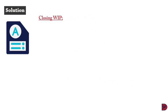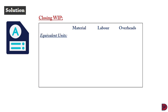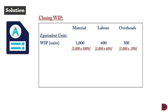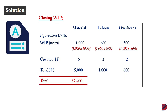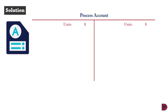For the closing work in progress of 1,000 units, we establish equivalent units: materials 100% complete (1,000 units), labor 60% complete (600 units), overheads 30% complete (300 units). Using the cost rates of $5 for materials, $3 for labor, and $2 for overheads, the closing WIP costs are $5,000 for materials, $1,800 for labor, and $600 for overheads — giving a total closing WIP cost of $7,400.